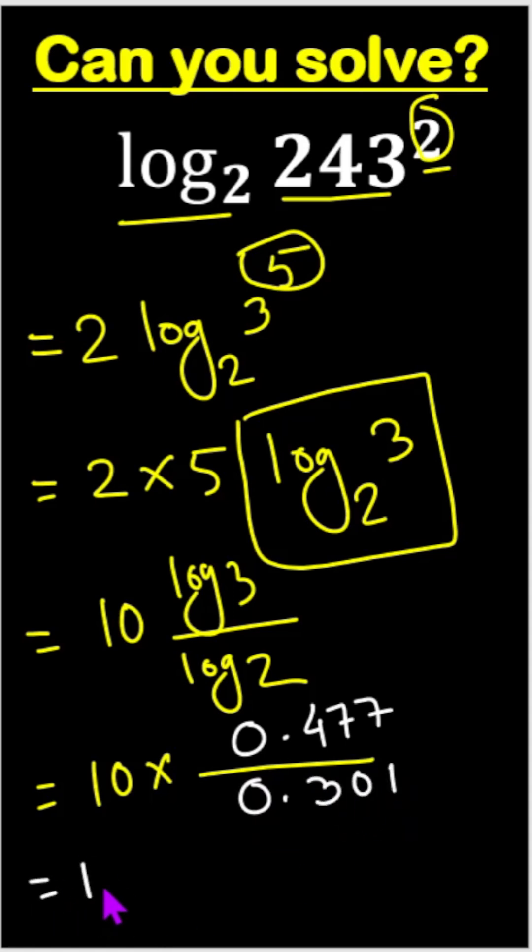So, 10 times this one will become 1.585 and our answer will be 15.85 approximate.